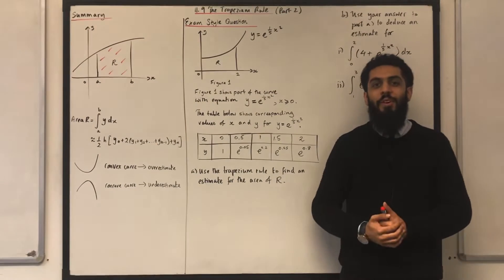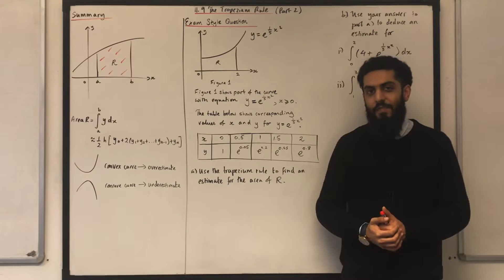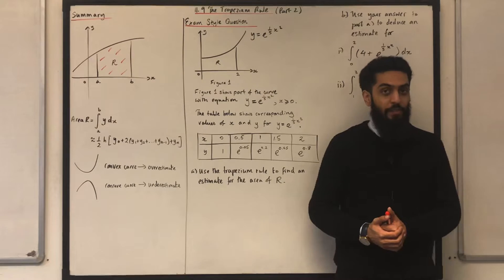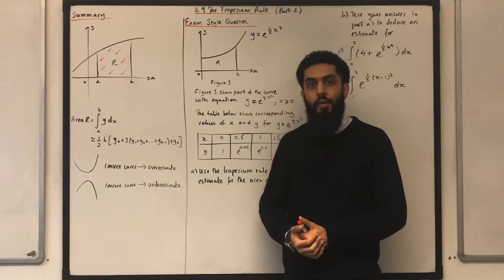Welcome back. In this video I'll be looking at 11.9, the Trapezian Rule, part 2. 11.9 represents chapter 11, section 9 of the Pearson Edexcel Pure Maths 2 textbook. Over here, I've got a summary of what was covered in the previous part of the video.